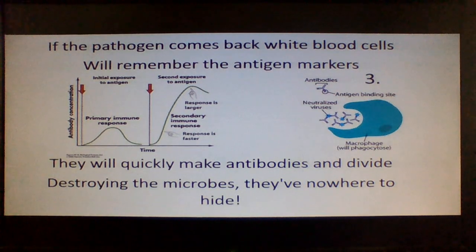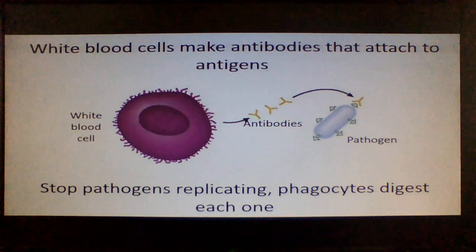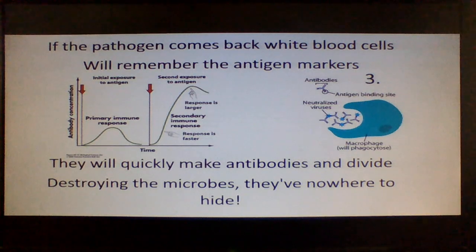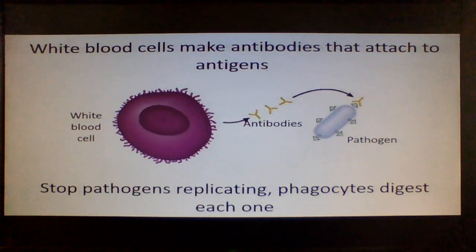Going back to our lovely diagram, think about what we've said: white blood cells make antibodies that attach to antigens, stop pathogens replicating, so phagocytes will digest each of them. If the pathogen returns, the white blood cells remember those antigen markers and can very quickly and rapidly make those antibodies, divide, and then destroy the microbes.